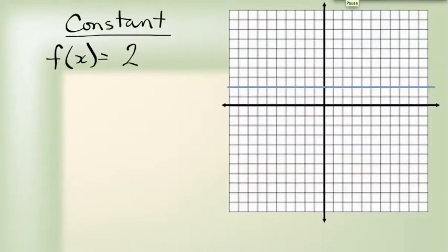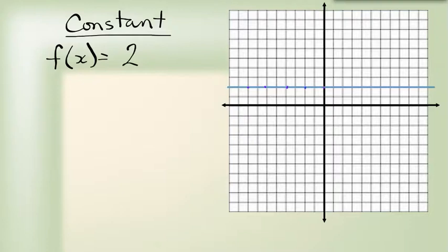If I look at a constant function — say, F of X equals 2 — what it ends up looking like is a straight horizontal line that crosses the Y-axis at 2. It doesn't matter what the value of X is; that Y value is going to be 2 everywhere. That's a constant function, and it has a degree of 0.